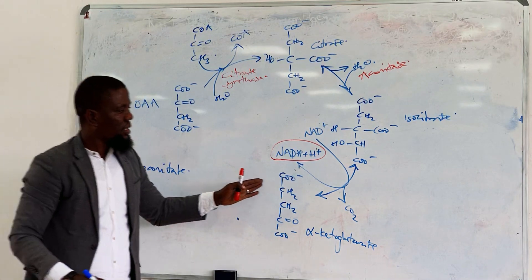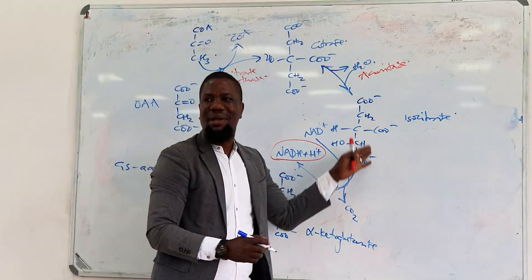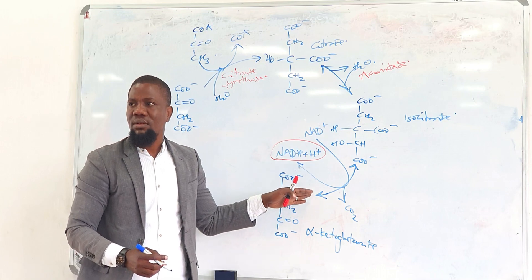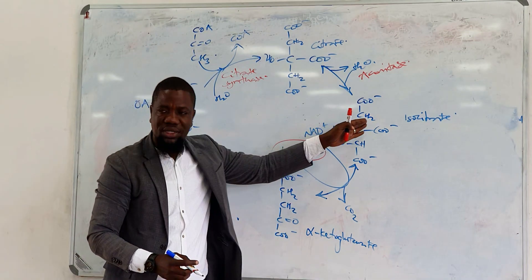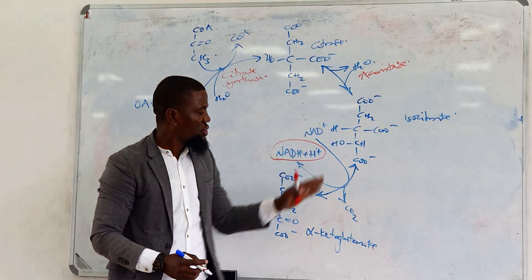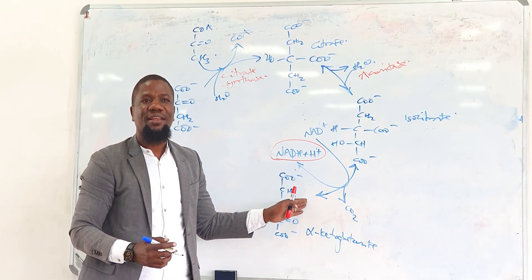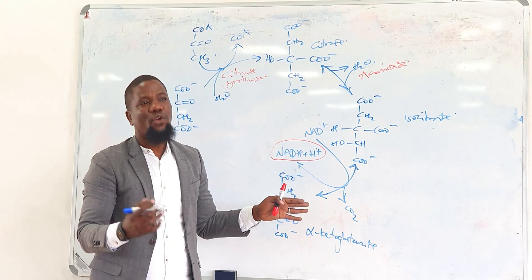Alpha-ketoglutarate is going to be produced by the enzyme - can anyone guess what the name of enzyme is going to be? The enzyme that will oxidize isocitrate into alpha-ketoglutarate? The way we name them? Isocitrate dehydrogenase. Correct.